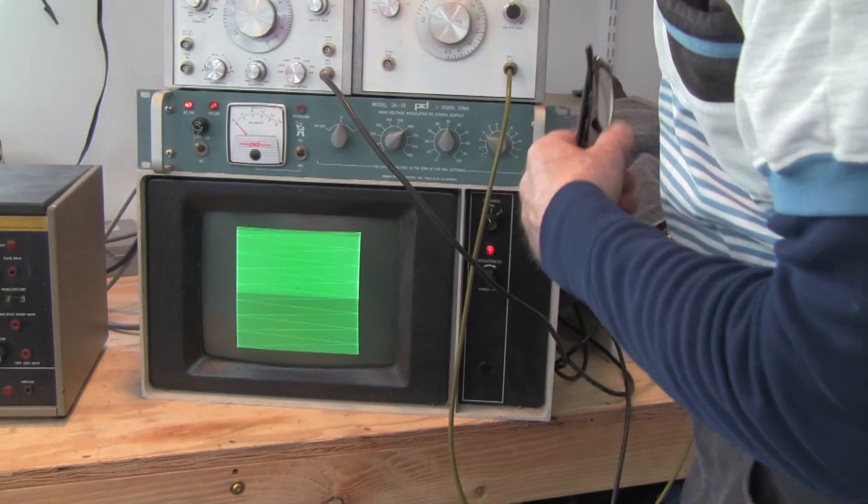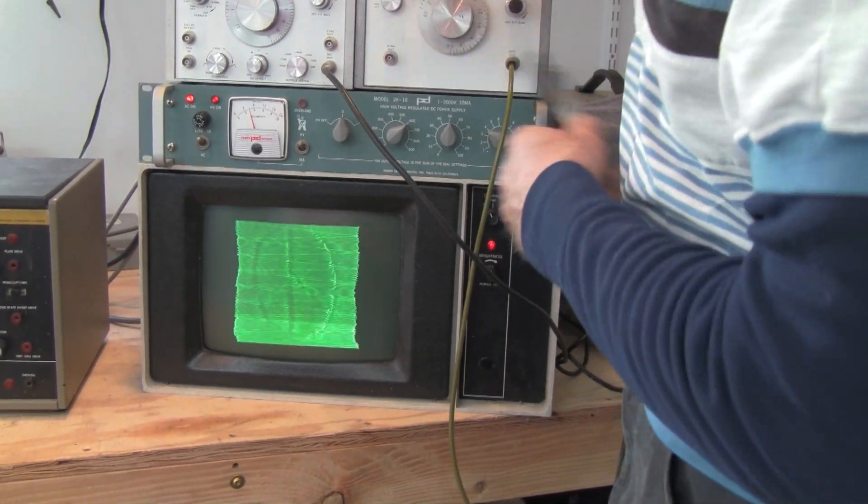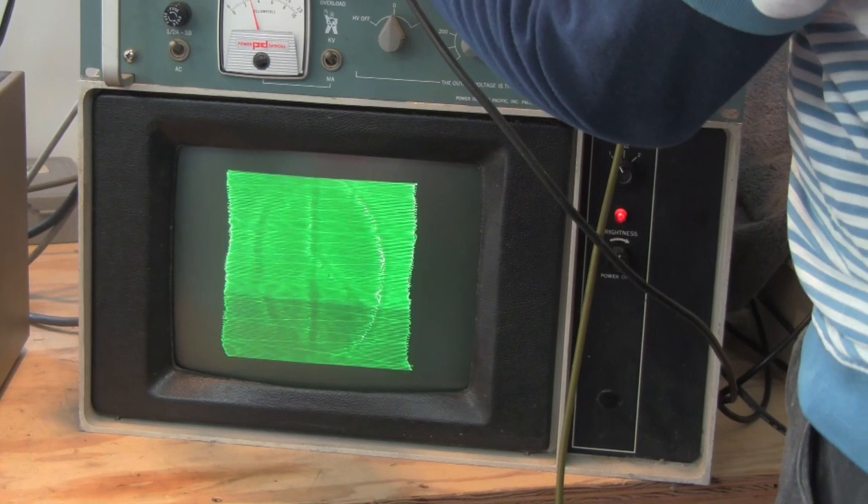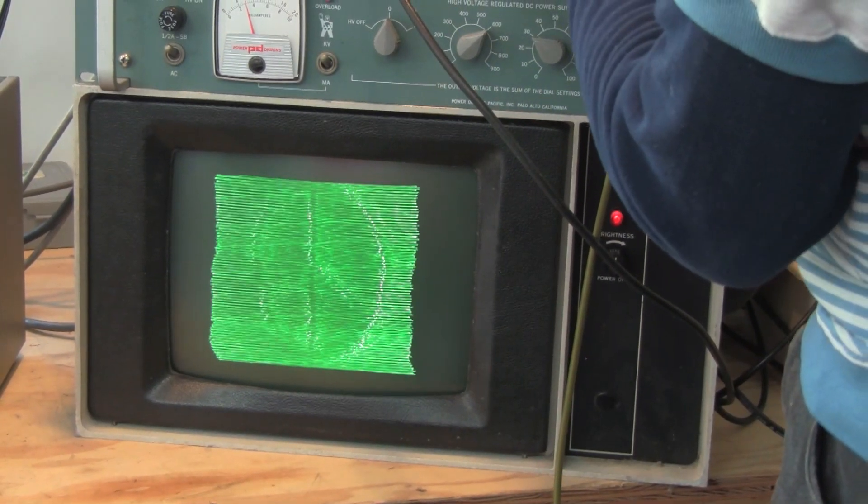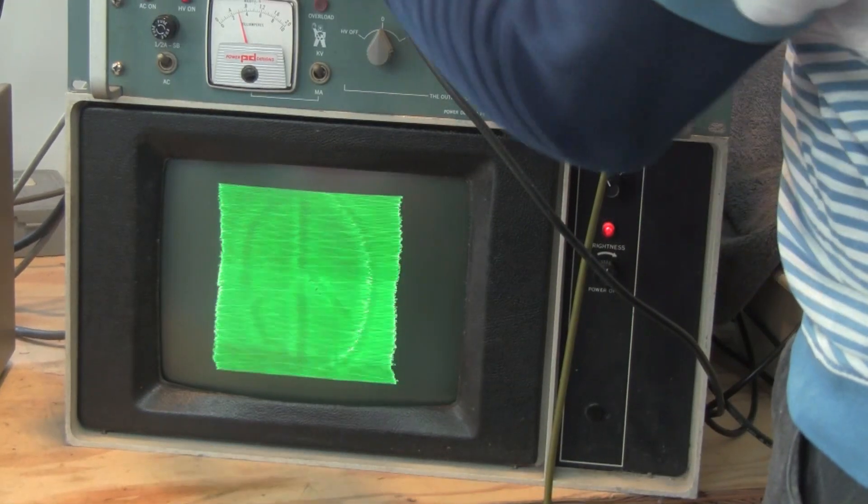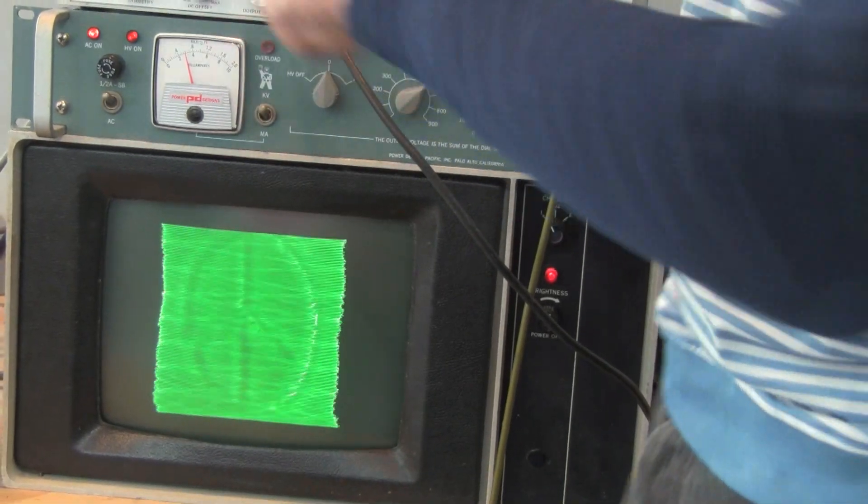Crank the phototube up, and we should see that pattern. There it is. And tweak the high voltage a little bit. Tweak the scanning rates. Here's the vertical. Here's the horizontal. And here's the vertical. We can go all the way down. Everything is DC coupled here.